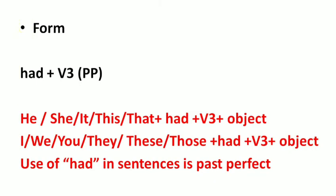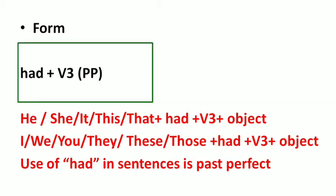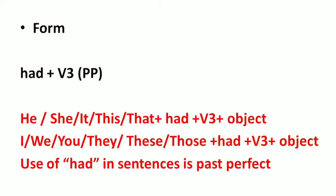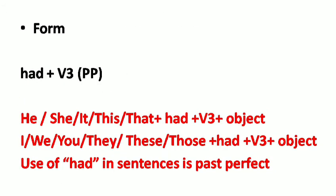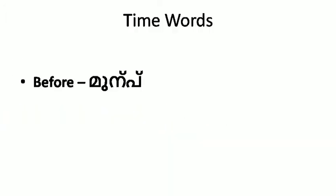Past perfect tense uses the auxiliary 'had' along with verb 3, that means the past participle form of the verb. 'Had' will be used with all subjects — plural or singular: he, she, it, this, that, they, those, these, we, you — all take 'had' plus V3.